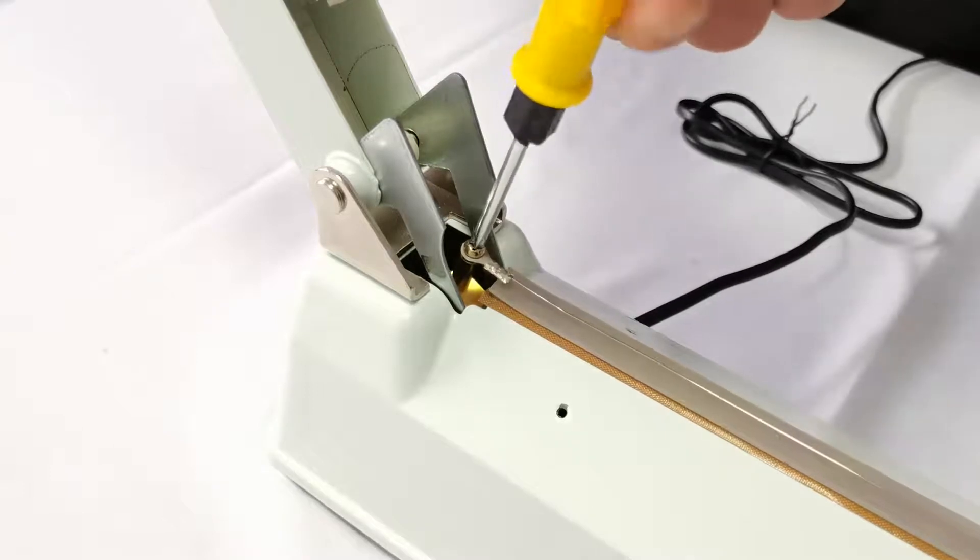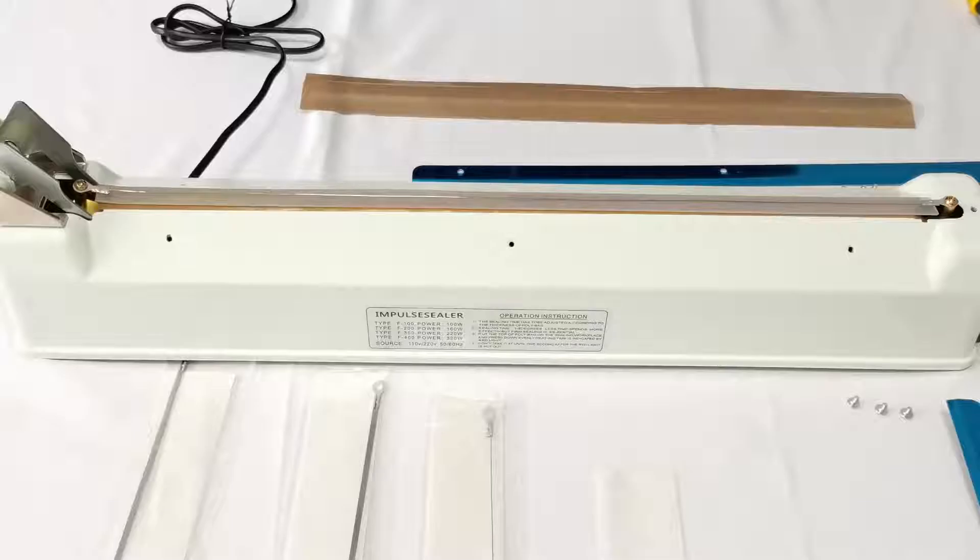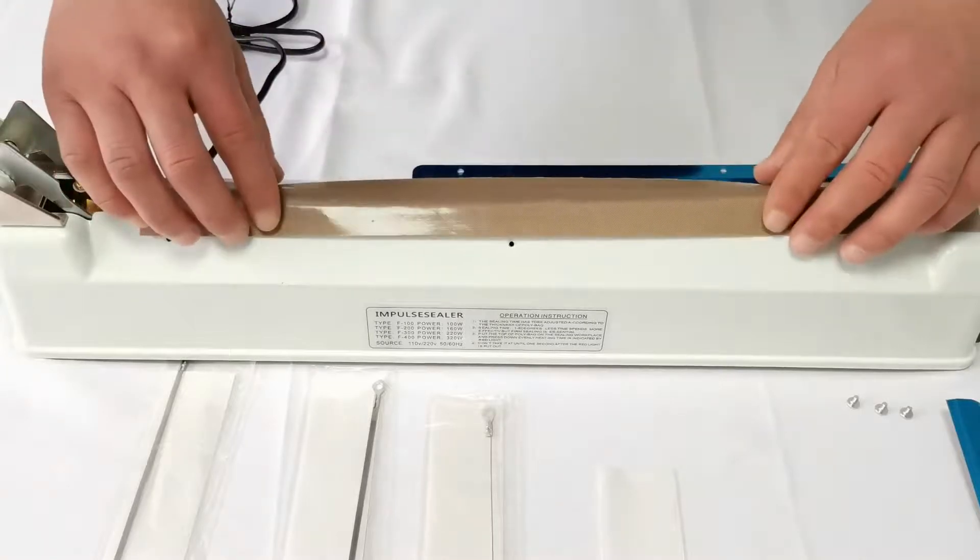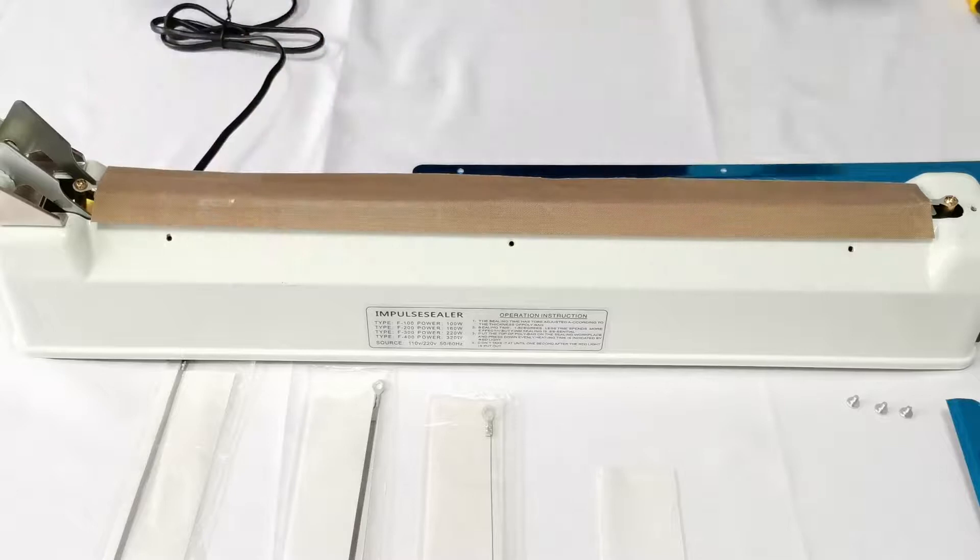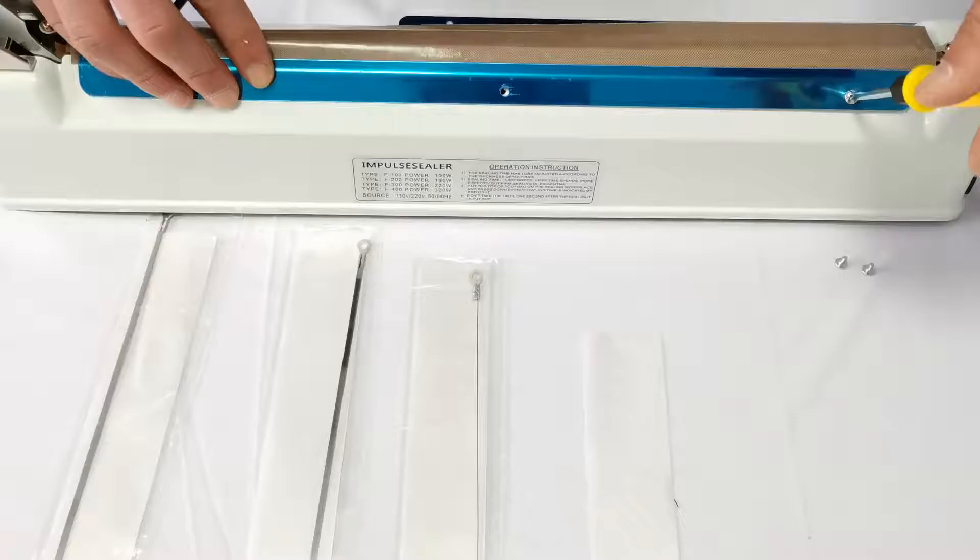Comes with 2 piece overload fuses, 4 piece heating wires replacement kits, including 2 round wires suitable for sealing plastic bags that need to be cut, and 2 flat wires suitable for sealing bags.